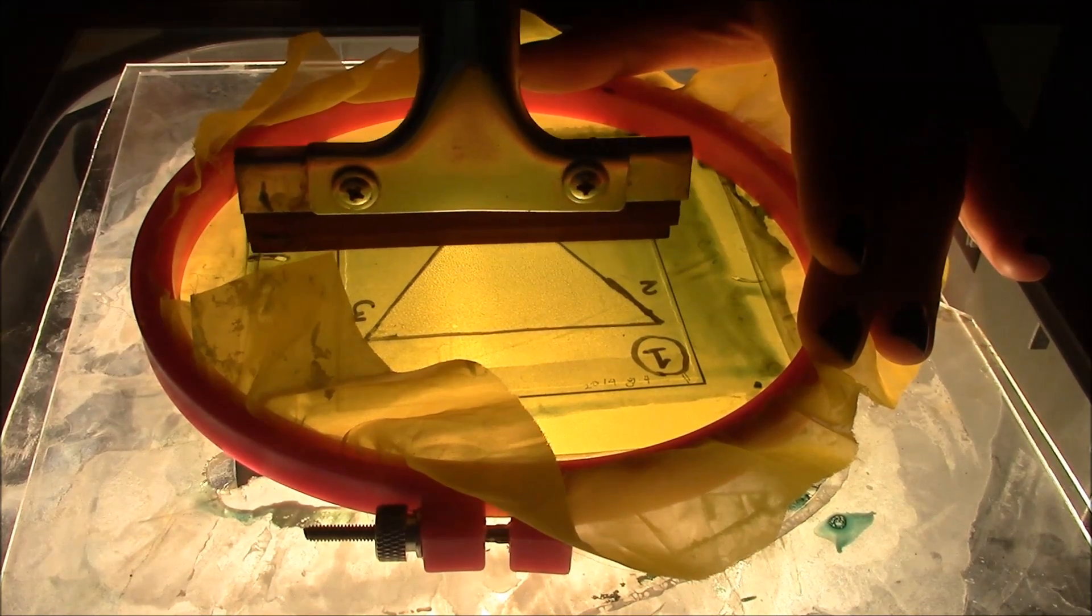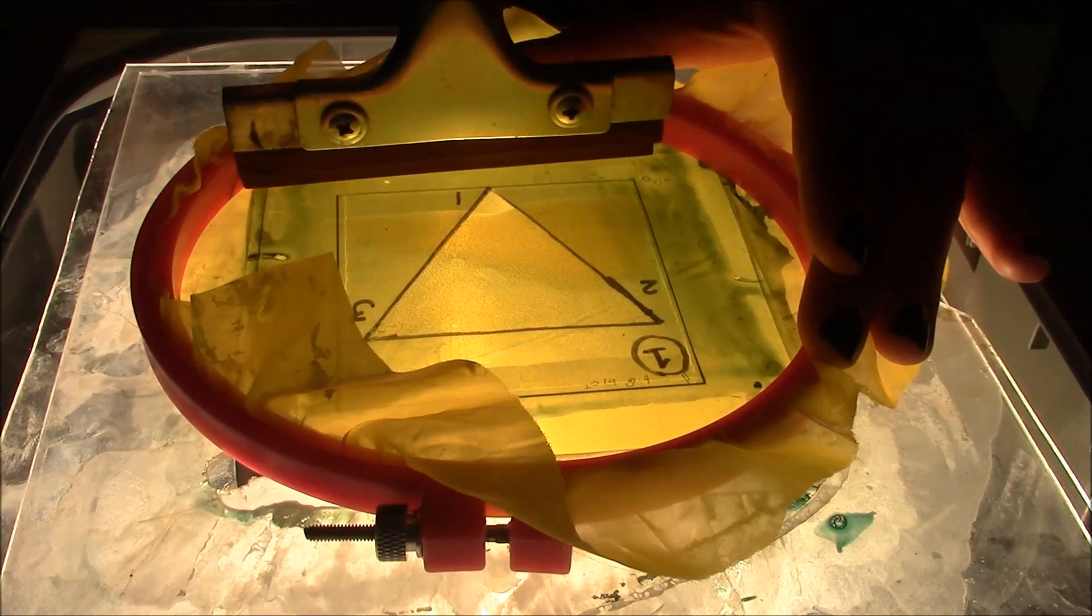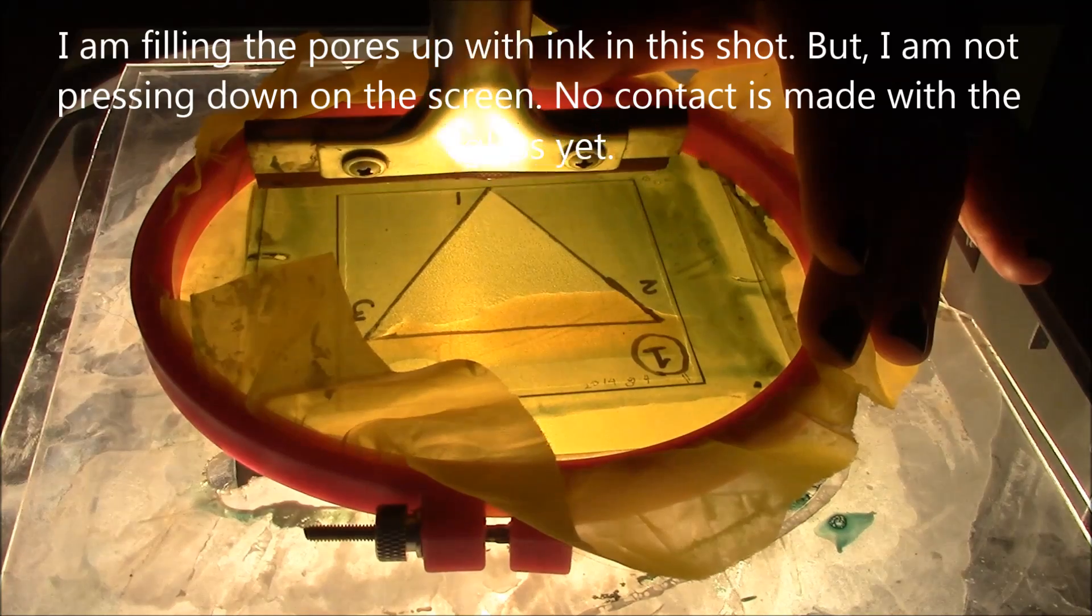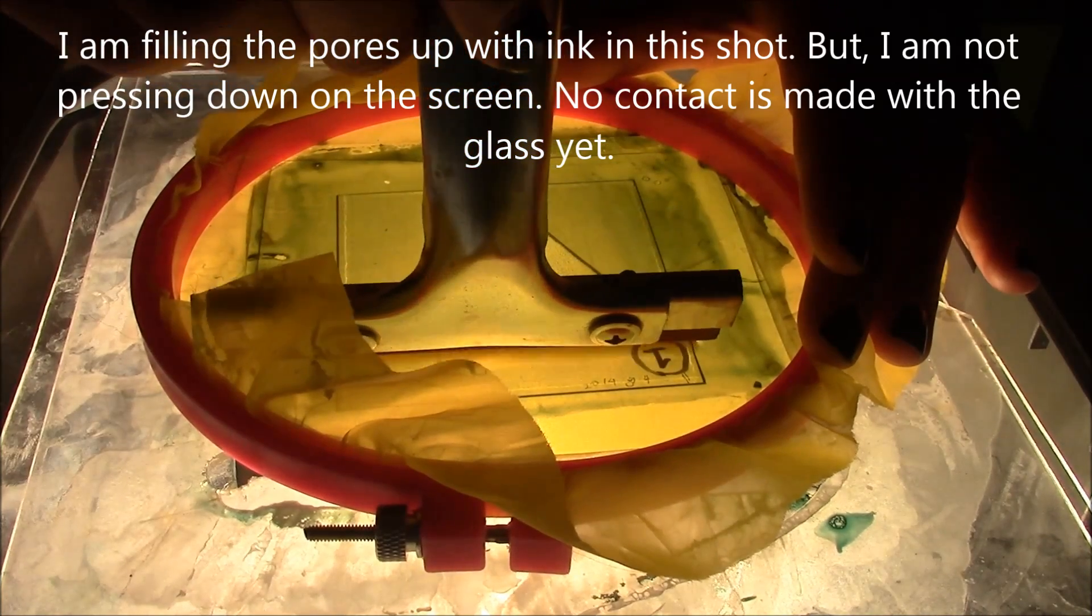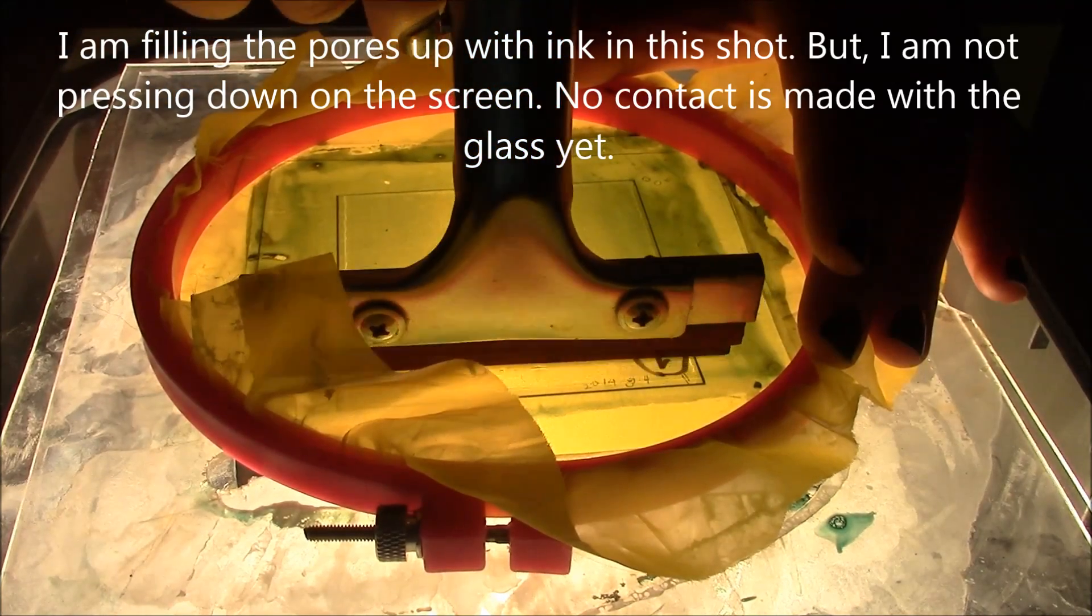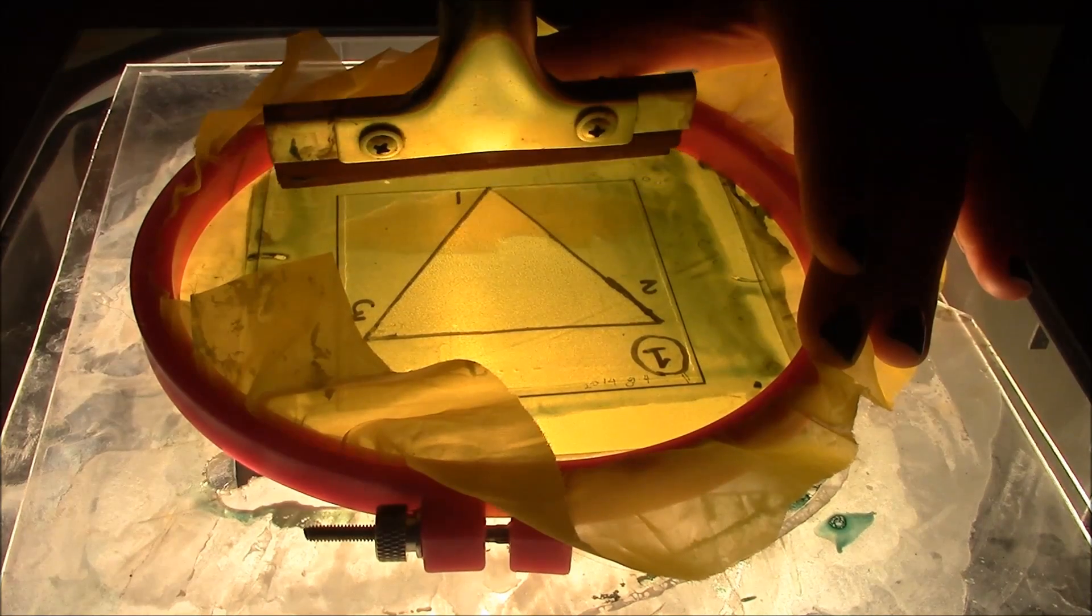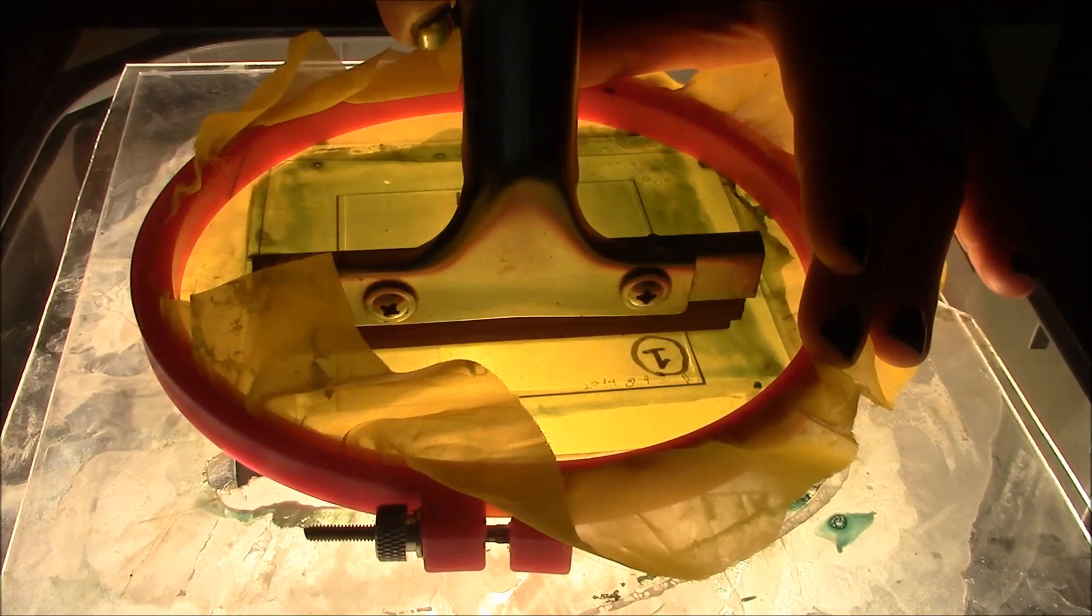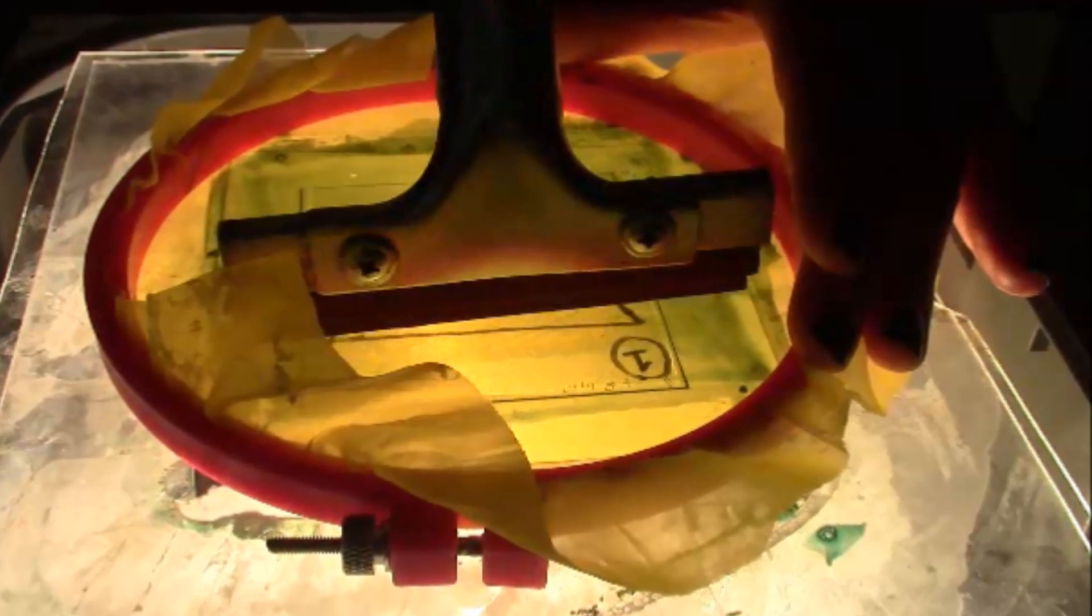Do not press down on the mesh. The ink should be viscous enough and the mesh hole is small enough that no ink has been deposited onto the glass yet. Push the ink back up to the top of the triangle, taking care to not press down on the mesh. The glass should still be clear of any ink.